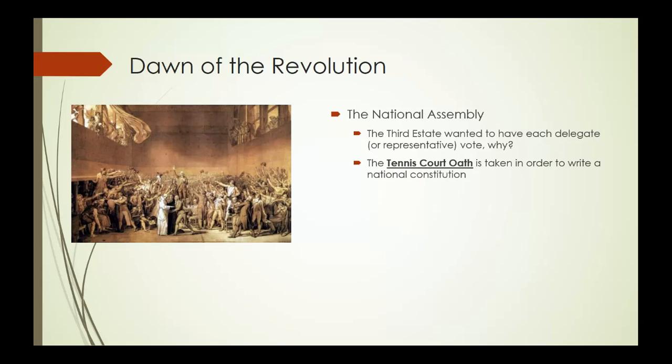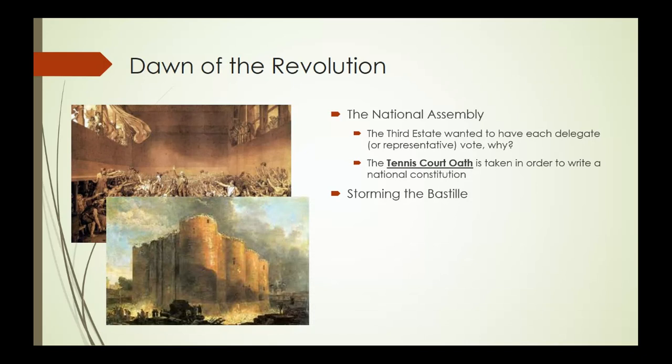The members of the third estate show up to one of the meetings of the Estates General and find themselves locked out. For them, this is the final straw. They move next door to a tennis court and take this oath to continue to meet in perpetuity until a new constitution and a new government of France is created — and this is the National Assembly. This is the moment when the National Assembly is born. It's not the legitimate government of France, but very quickly the people of France throw their weight behind it and support it against the monarchy.